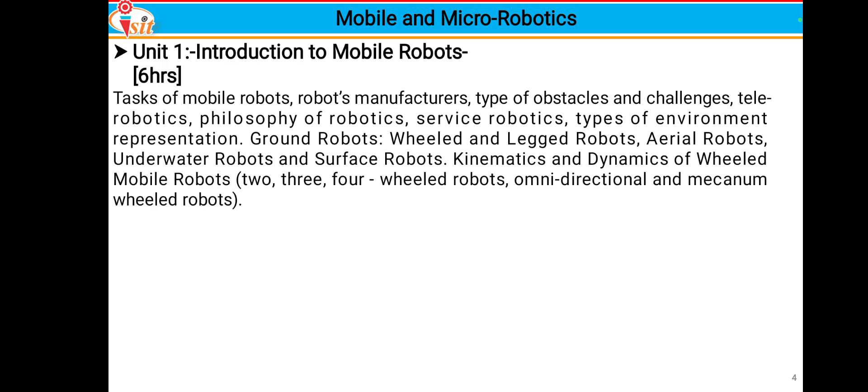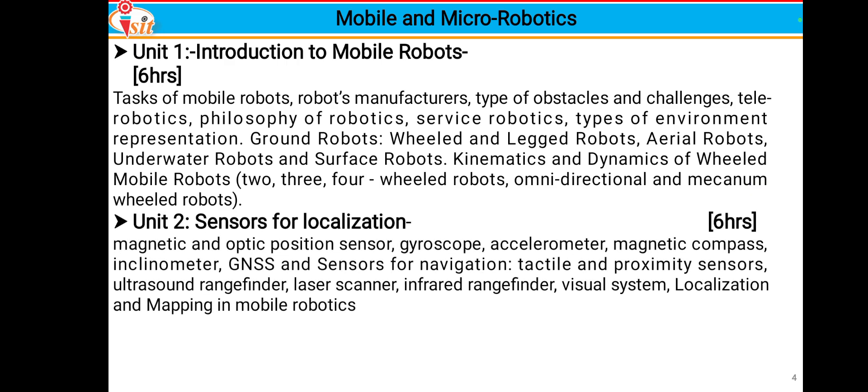In Chandrayaan 3 we used the Pragyan robot — that is a rover — which is a wheeled robot. Unit 1 also covers aerial robots, underwater robots, surface robots, kinematics and dynamics of wheeled mobile robots (2, 3, and 4-wheeled robots), omnidirectional mechanisms, and wheeled robots.